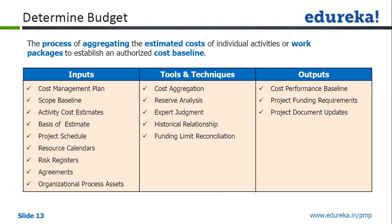Cost aggregation was in effect. You saw how aggregation is performed, which is a simple, straightforward process to arrive at your cost performance baseline — the way we call it cost baseline — which is essentially the authorized time-phase project budget.